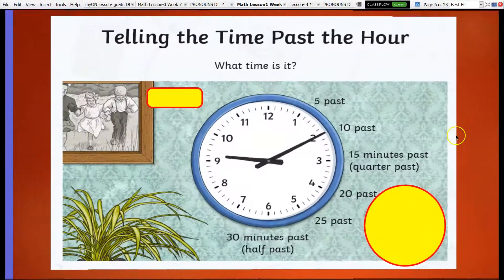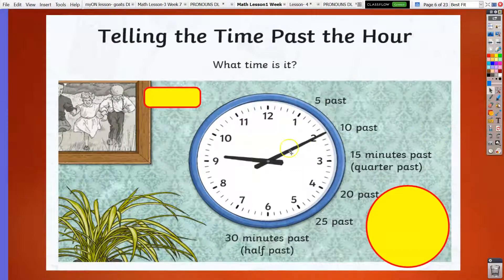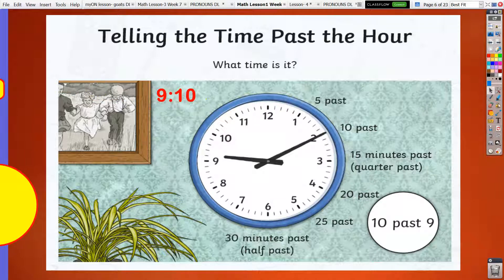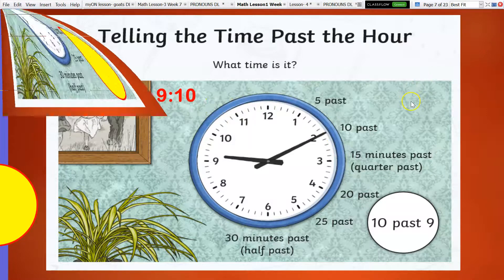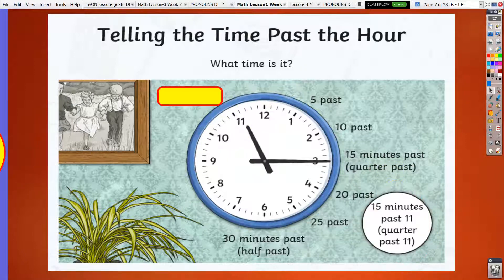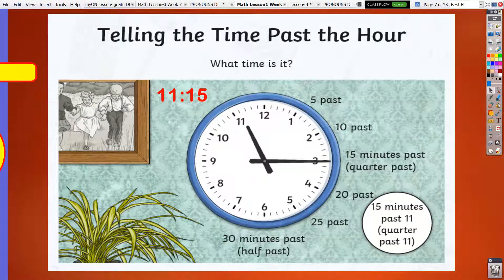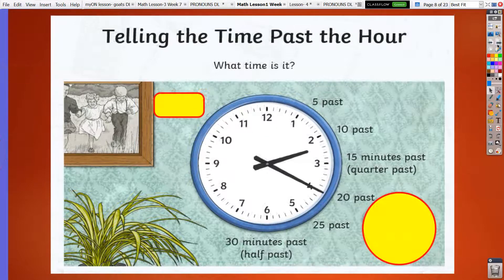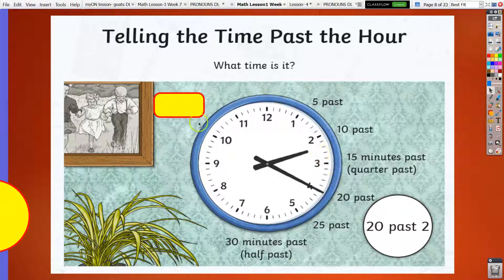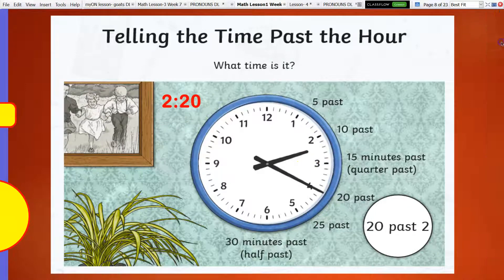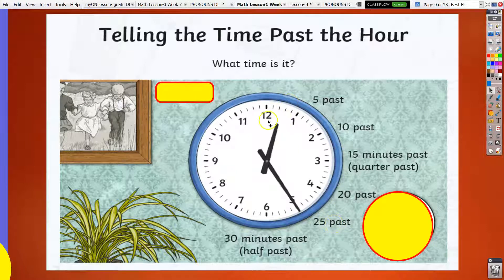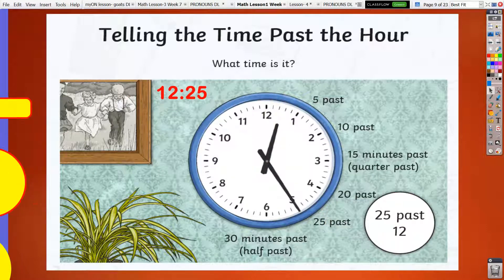Can you identify the time? What time is it now? It's 10 past 9, 10 past 9, or 9:10. What time is it? We have now 15 minutes past or quarter past 11, or 11:15. What time is it? We have 20 past 2. What time is it? It's now 25 past 12, 25 past 12, or 12:25.